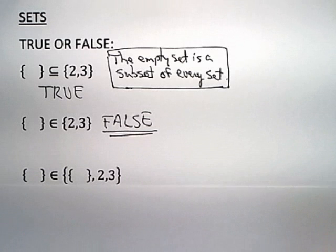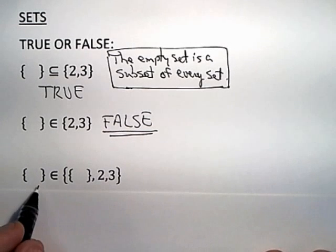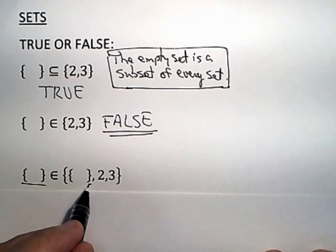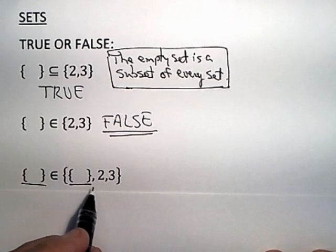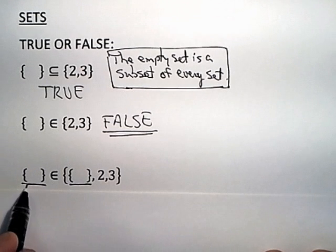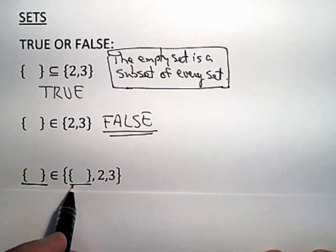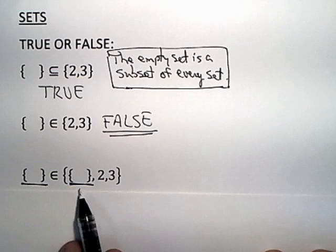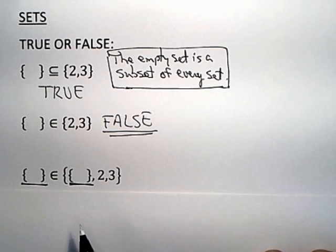To even further emphasize this, look now, I kept the element notation, but I actually put the empty set as an element of the set on the right. Now, the exact thing you see on the left appears inside of the set on the right as an element of the set on the right.